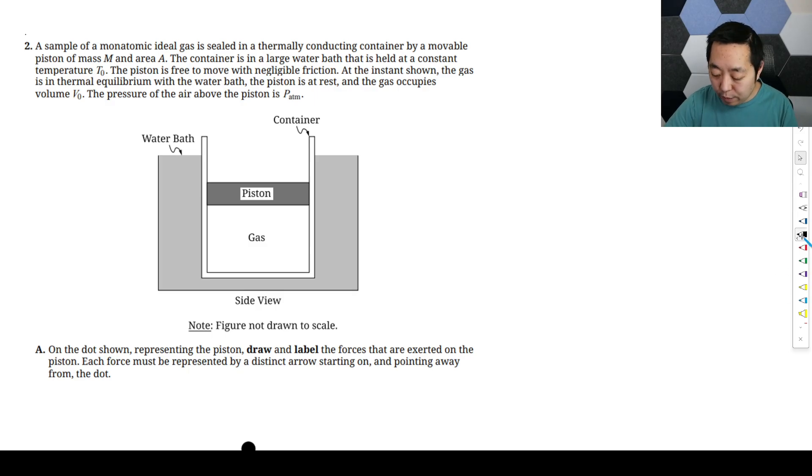Alright, let's look at the second FRQ in the 2025 AP Physics 2 exam. We have a sample of monatomic ideal gas sealed in a thermally conducting container by a movable piston of mass M and area A. The container is in a large water bath held at constant temperature T0. The piston is free to move with negligible friction. At the instant shown, the gas is in thermal equilibrium with the water bath, the piston is at rest, and the gas occupies volume V0. The pressure above the air is P atmosphere.